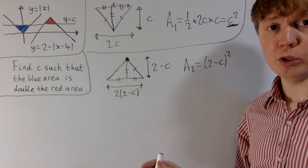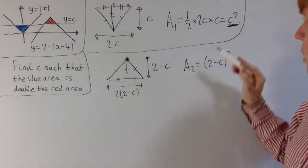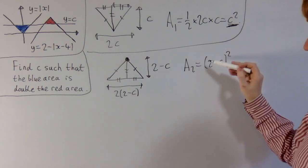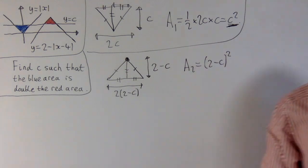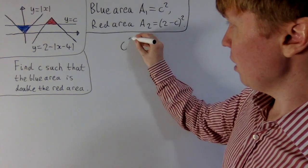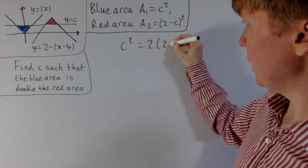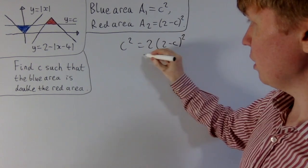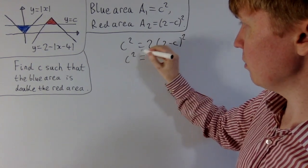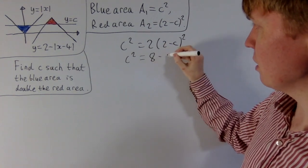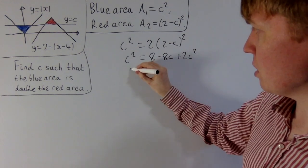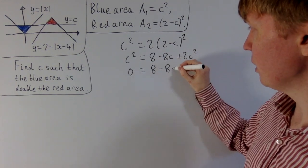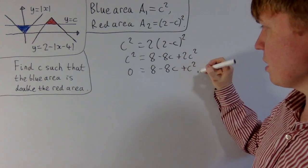Basically we want to set this one equal to 2 times the second area, and then we can find the value of c. So we'll set c squared equal to 2 into 2 minus c all squared. Then if we expand the right-hand side and multiply by this 2, we'll get 8 minus 8c plus 2c squared. Take away c squared from both sides, we get 8 minus 8c plus c squared is equal to 0.